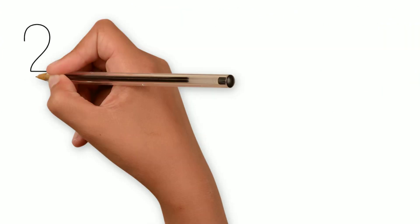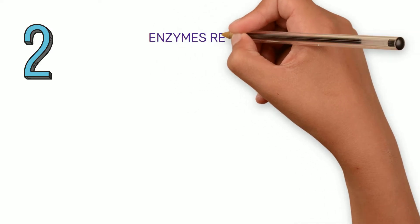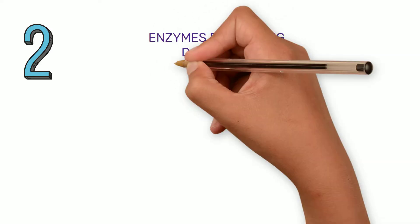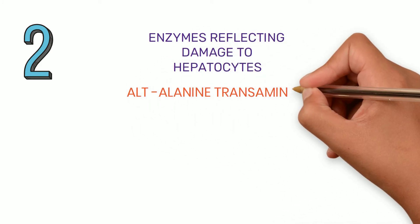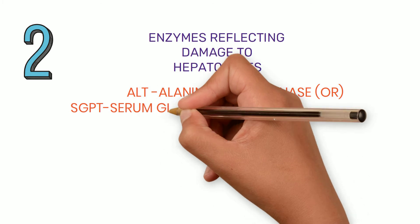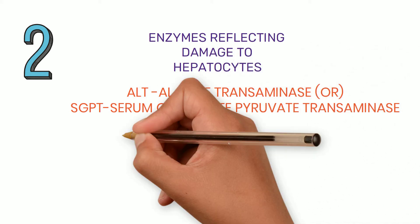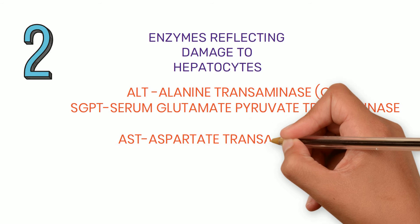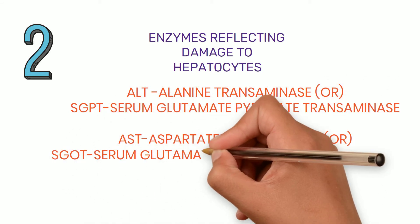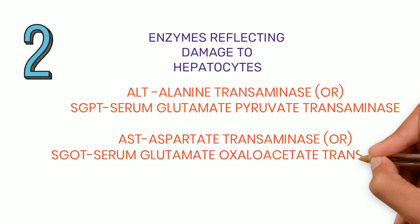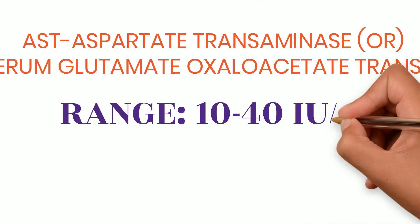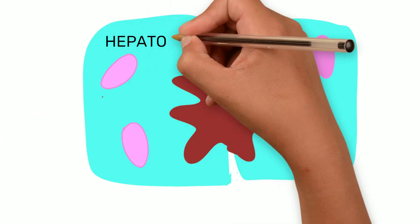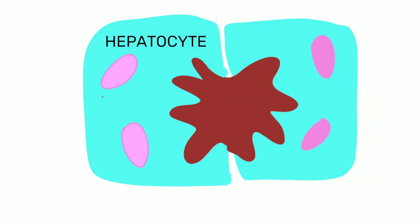The second group consists of enzymes reflecting damage to hepatocytes. There are two enzymes: first is ALT, alanine transaminase or SGPT (serum glutamate pyruvate transaminase); second is AST, aspartate transaminase or SGOT (serum glutamate oxaloacetate transaminase). Normal levels of both are usually in the range of 10 to 40 international units per liter.